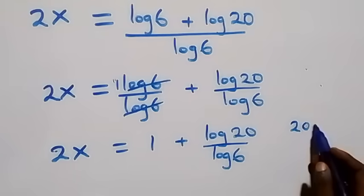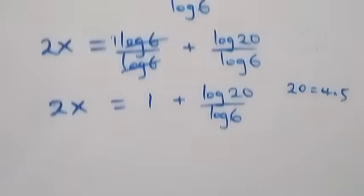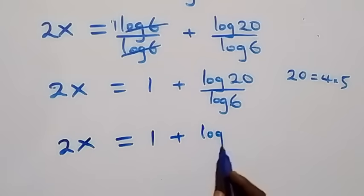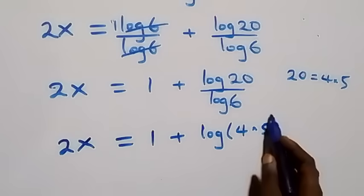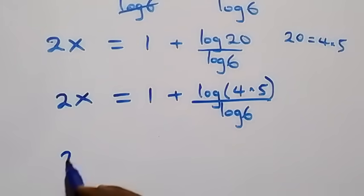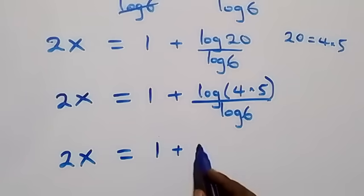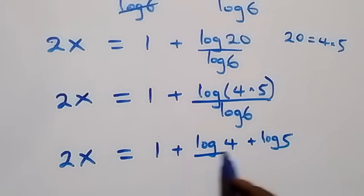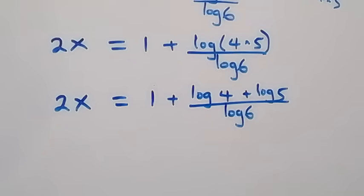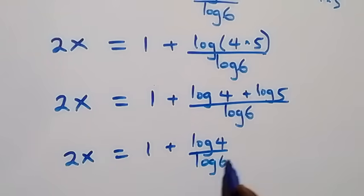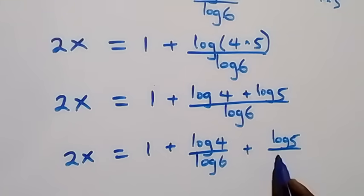We can write 20 as 4 times 5. So what we have becomes 2x equals log of 4 times 5, over log 6. By the law of logarithms, this expands to 2x equals 1 plus log 4 plus log 5, over log 6. Separating into two fractions: 2x equals 1 plus log 4 over log 6, plus log 5 over log 6.